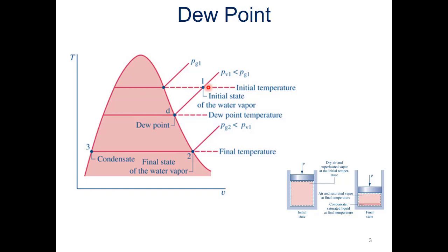Now, once we start to cool that air, it will maintain its partial pressure of vapor. The amount of vapor in that air will not change if we cool the air. So it'll stay on this constant pressure line and move toward the vapor dome to a point where we reach the dew point — that is the temperature. So if we start at this initial temperature and cool down to our dew point temperature, we'll eventually hit the vapor dome.